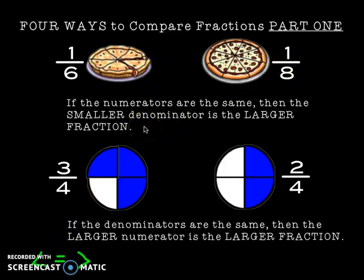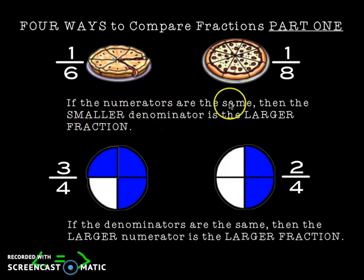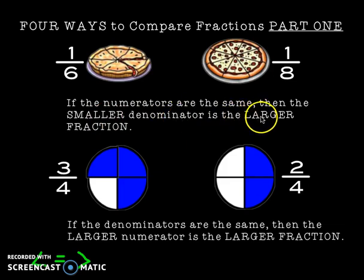Let's look at the first rule. If I have two fractions and the numerators are the same, then the smaller denominator is the larger fraction.